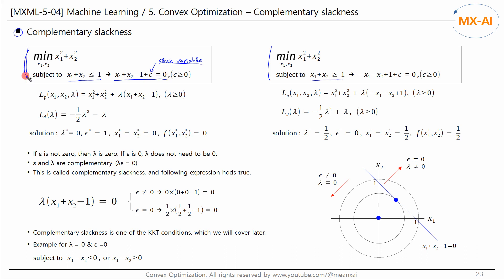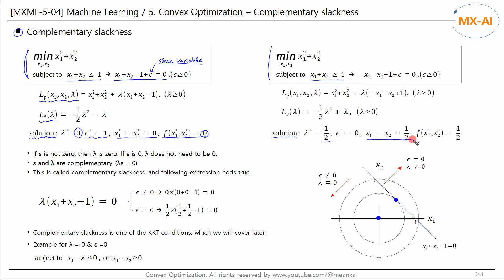Let's look at the first problem. The Lagrange primal function is like this, and the dual function is like this. The optimal solutions are: the optimal lambda is zero, and both x1 and x2 are zero. The primal solution is also zero. If you use a slack variable, the epsilon will be one. The optimal solutions for the second problem are that lambda, x1, and x2 are all one-half. The primal solution is also one-half, and the slack variable epsilon is zero.